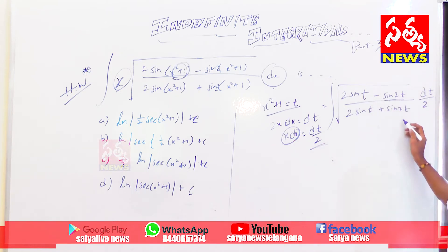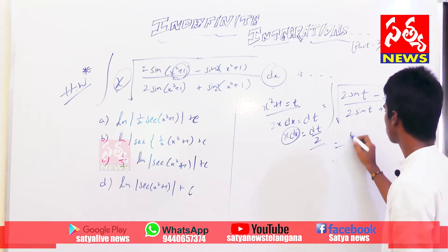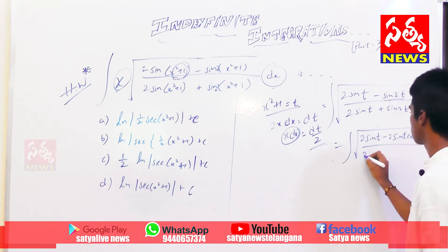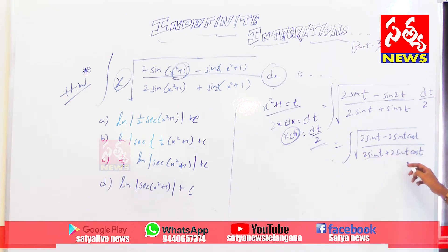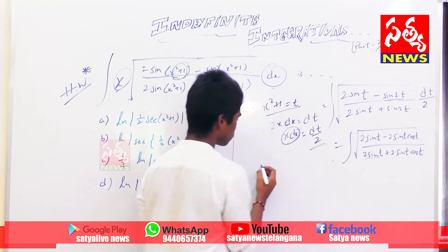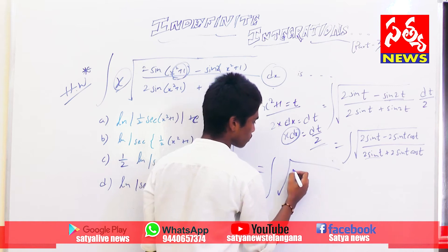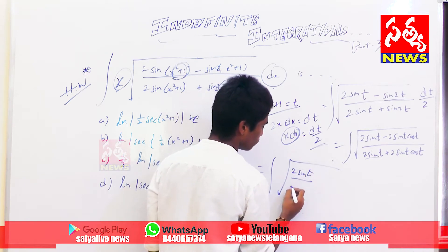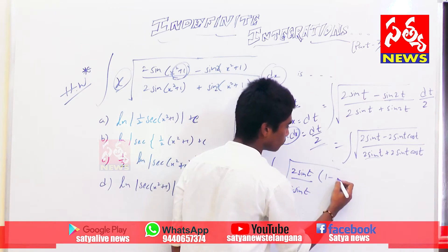By expanding sine 2t, we get 2 sine t and cos t. Taking 2 sine t common, we get 2 sine t in the numerator, which can be cancelled both up and down.